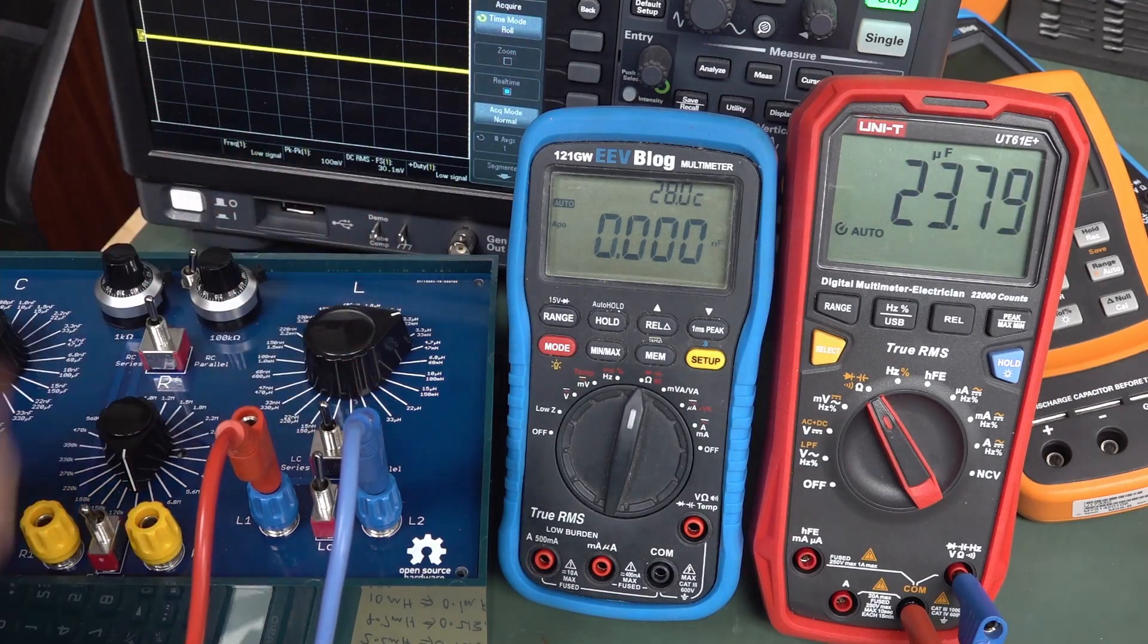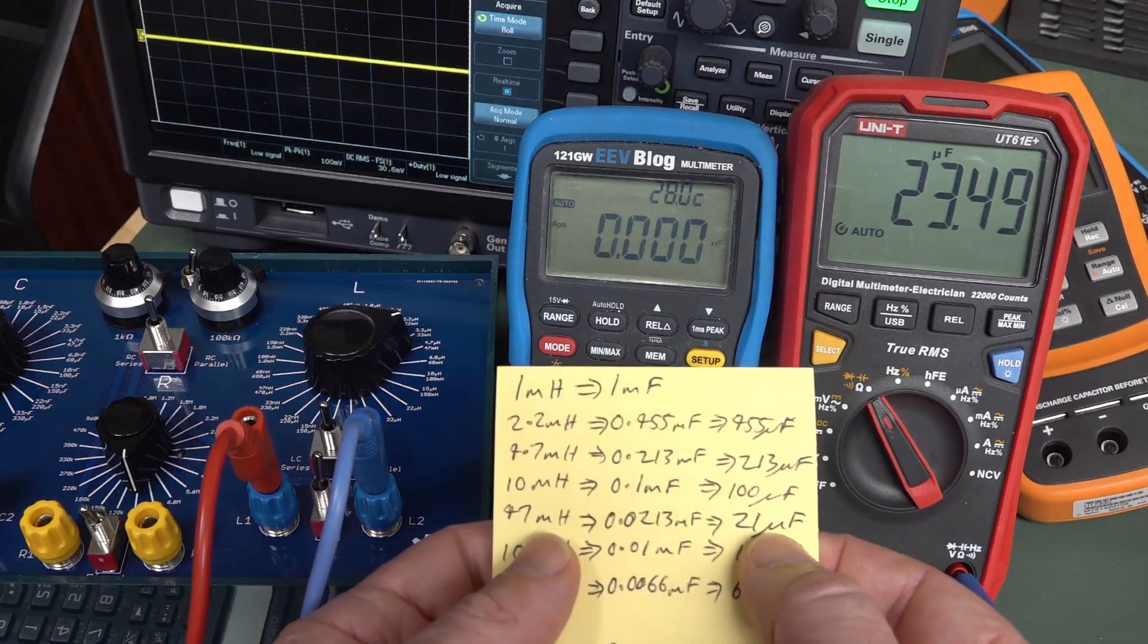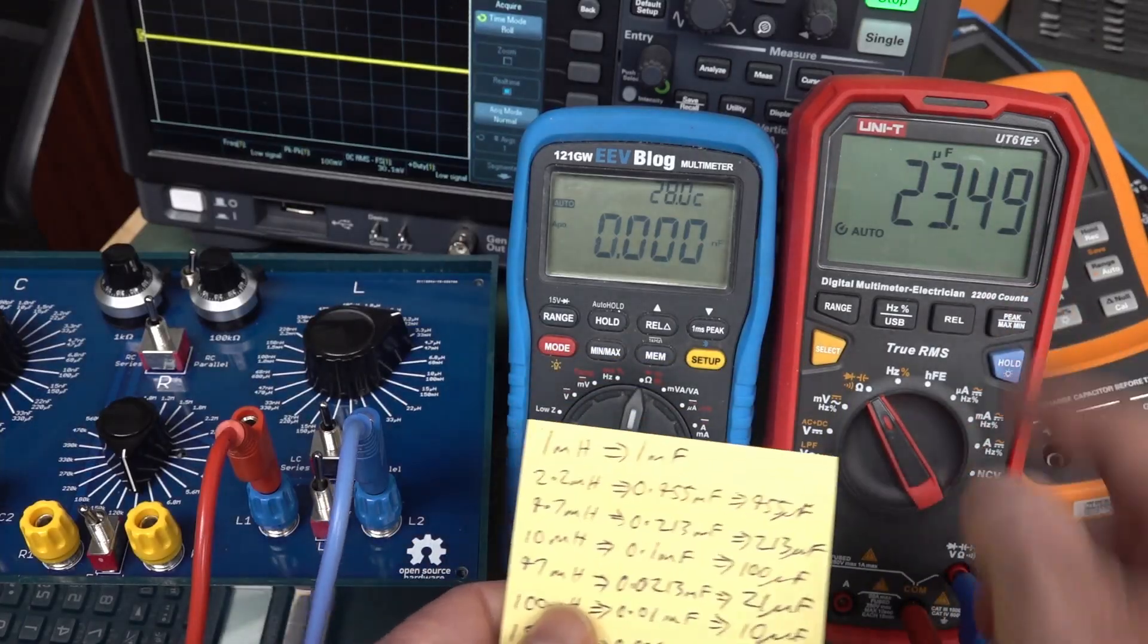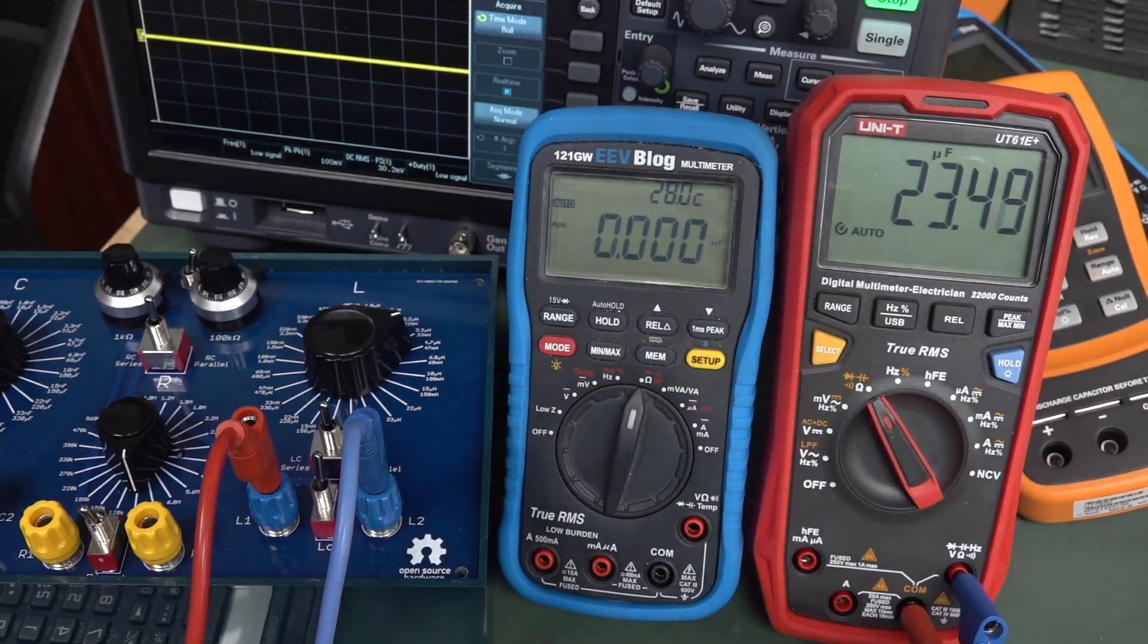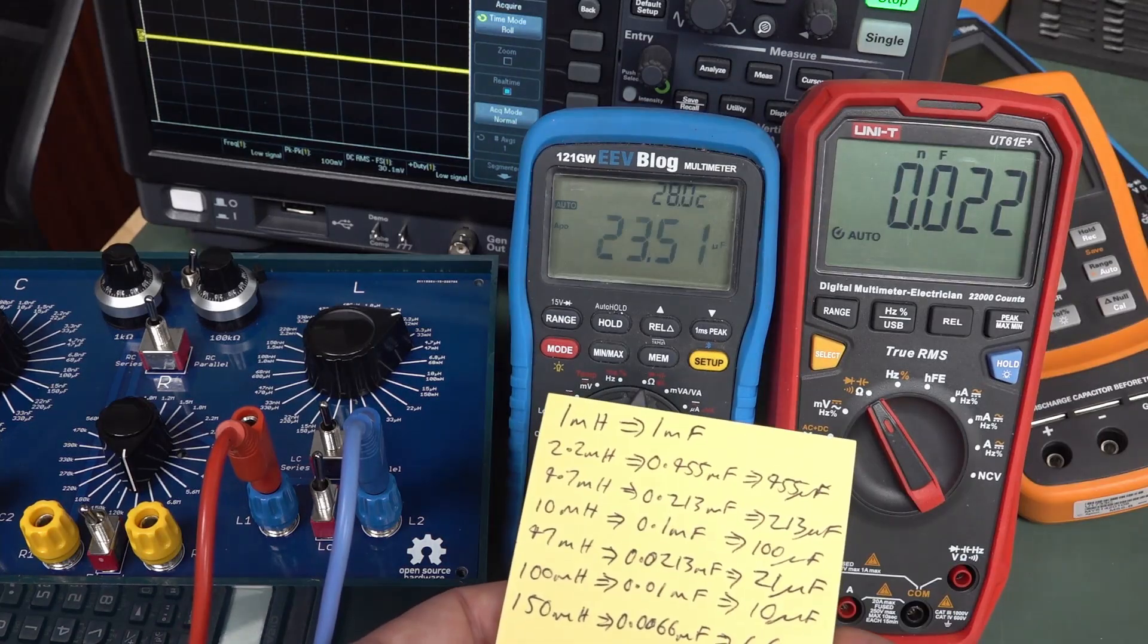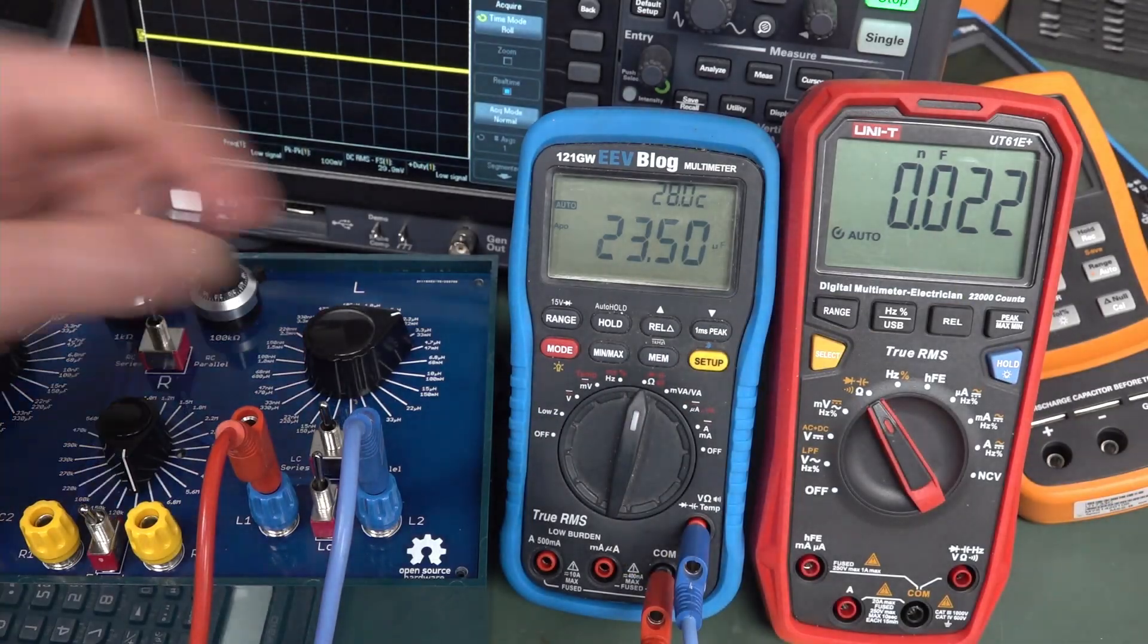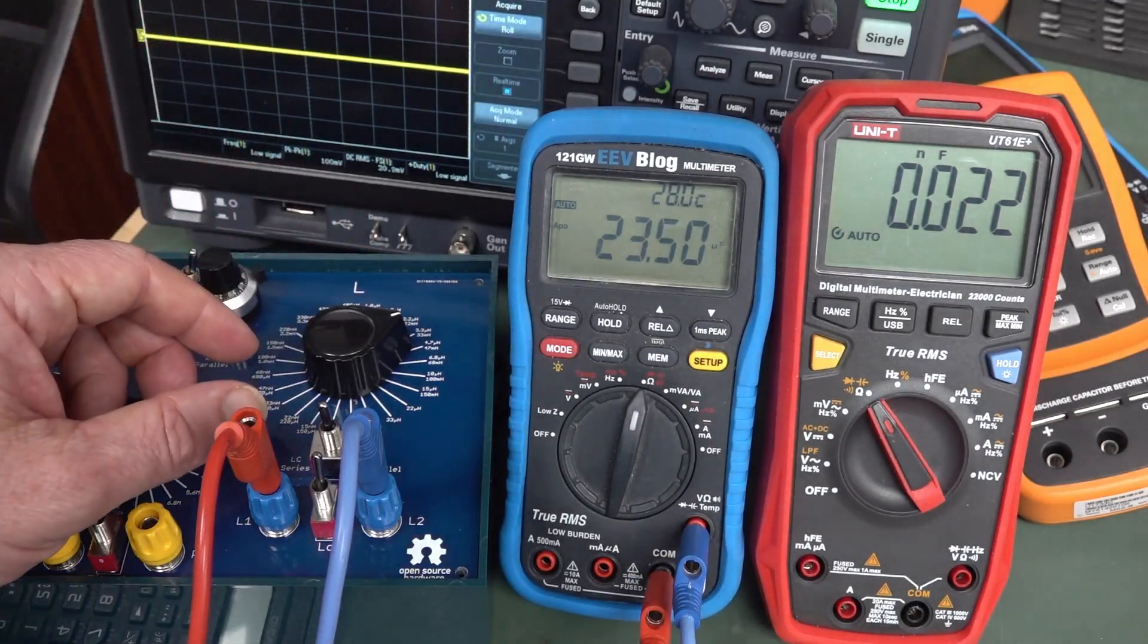And let's choose, say, 47 millihenrys. What do we expect? 21 mic. We're getting 23 mic. There you go. And we can swap that back. 23.5. That's good enough for Australia. That gives you a pretty decent indication.